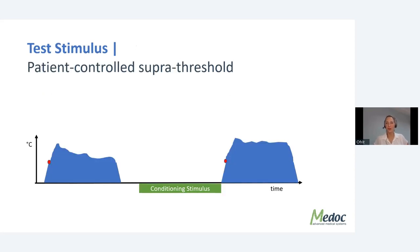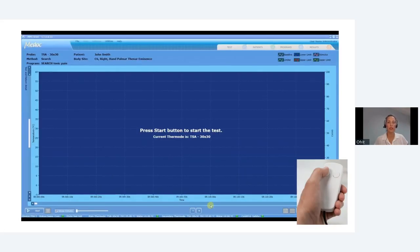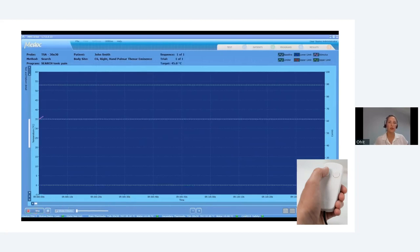Another approach is a patient-controlled suprathreshold stimulus: we calibrate to find what stimulus causes a specific pain level, then let the patient control the intensity. We say: stay at the same pain level, but control the temperature by pressing yes or no on the response unit. In our software, the target temperature is 45 degrees; once reached, the patient adjusts temperature up or down by pressing the button.